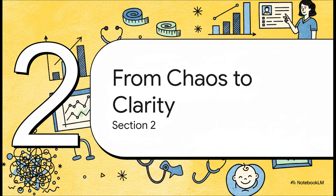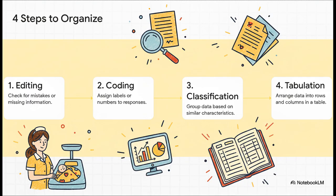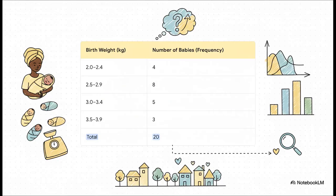Now it's time to bring some order to that chaos. There's a really clear, systematic way to do this. First, you edit — scan for any obvious mistakes or typos. Then you might code the data, maybe assigning one for male and two for female. After that, you classify it, grouping similar data together. And the final step is tabulation — putting it all into a nice neat table. And look what happens when you do that: a pattern just jumps out. Using a slightly larger sample of 20 babies, you can immediately see that the most common weight group is between 2.5 and 2.9 kilos. The chaos is already starting to look like a story.